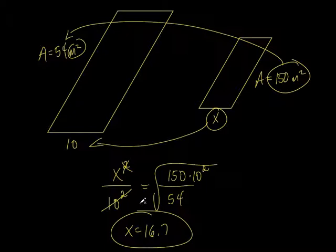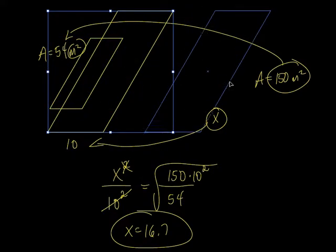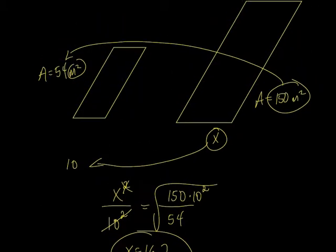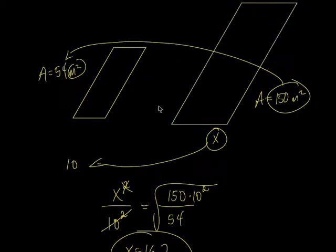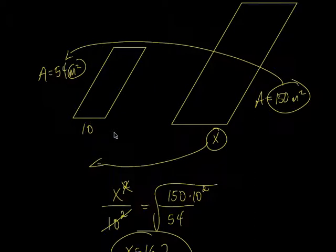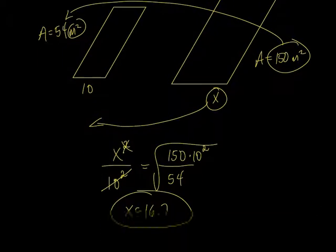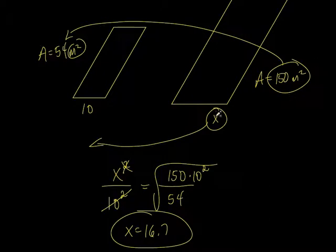A student asks: shouldn't the area of the smaller shape be smaller? Yes, absolutely right — the picture just wasn't drawn accurately. X equals 16.7, and 16.7 is bigger than 10, so that side is on the larger polygon, which does make sense since the area 150 is bigger than 54. So that side would be about 16.7.